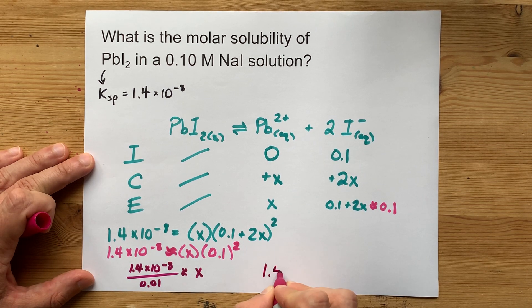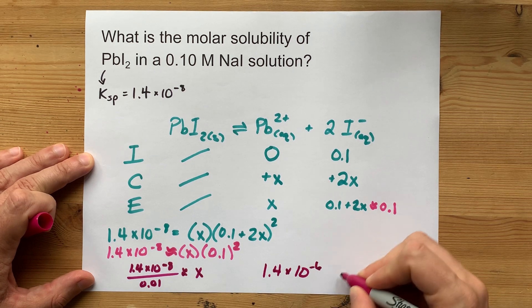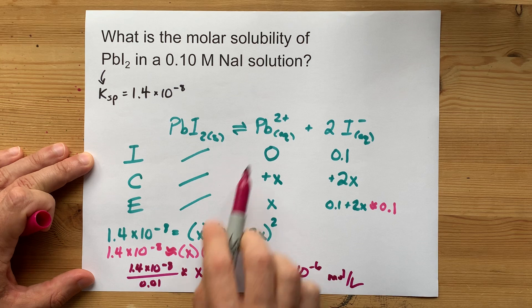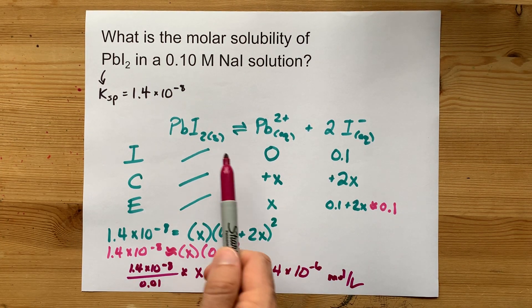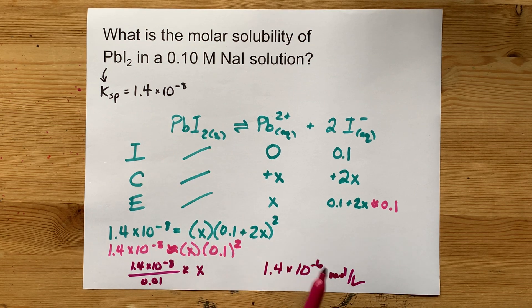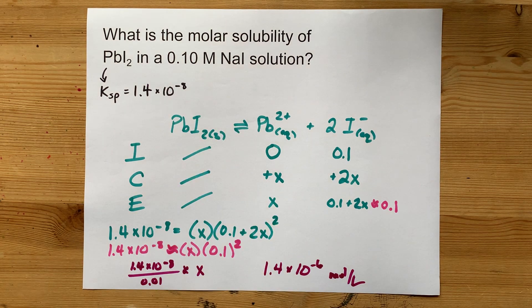That gives me 1.4 times 10 to the negative 6 moles per liter as the amount of Pb²⁺ that will dissolve, and correspondingly, the number of moles of PbI₂ that will dissolve per liter of 0.1 molar sodium iodide solution.